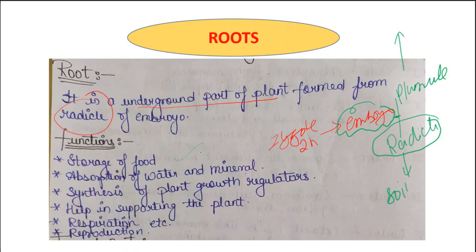Root helps in supporting the plant by holding the soil tightly. Roots also help in respiration and reproduction. For example, if you cut a root of a plant and replant it, a new plant can originate — that is a sort of vegetative propagation. These are the different functions of the root.